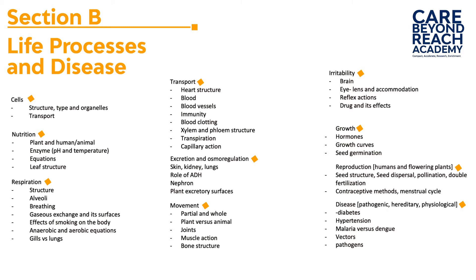After transport we move to excretion and osmoregulation. We need to know the structure of the kidney, the nephron, the role of ADH in osmoregulation, the loop of Henle, the different substances absorbed, ultrafiltration, and the excretory surfaces — which include not just the kidneys but also the lungs and the skin, as these also play an important role.